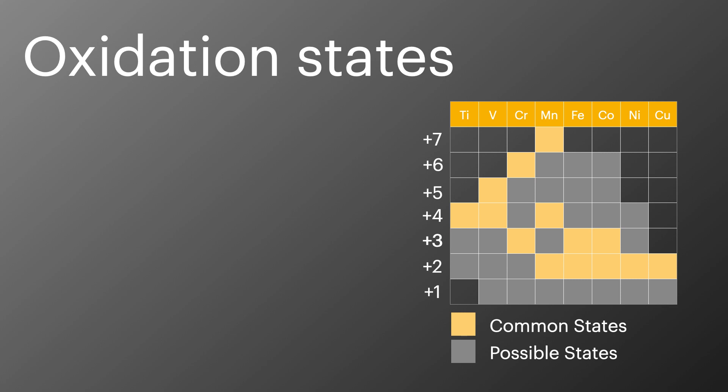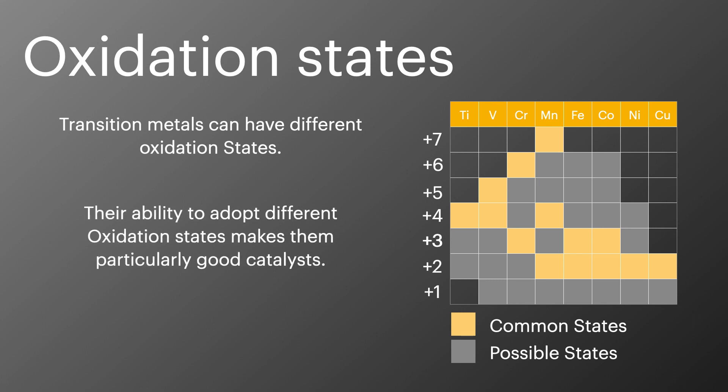As I mentioned in the last episode, link at the top of the screen if you haven't watched it already, transition metals can have different oxidation states, and it's this ability which makes them particularly good for use as catalysts.